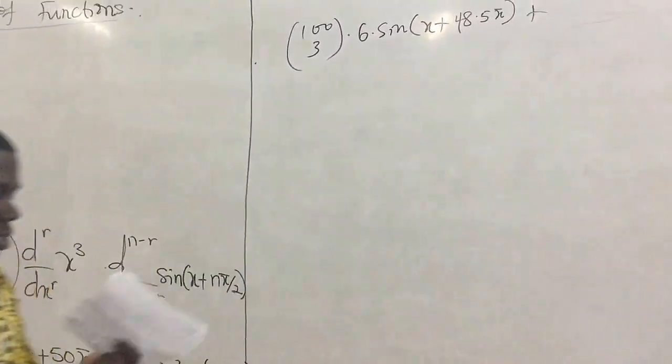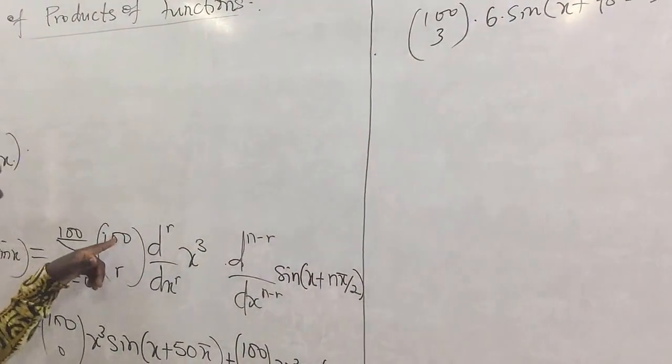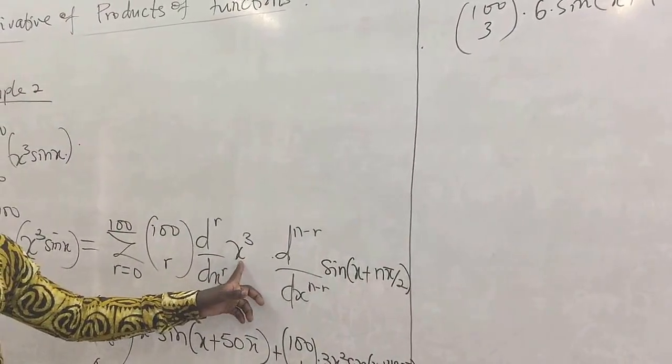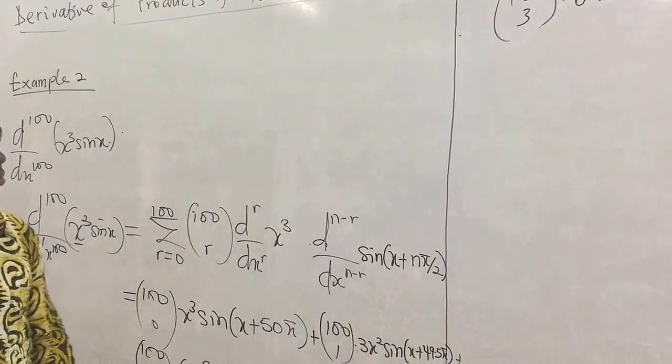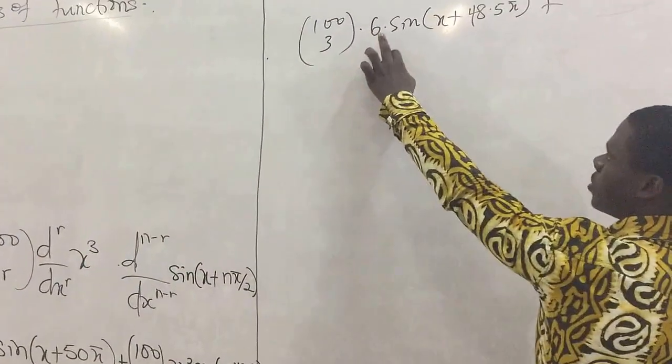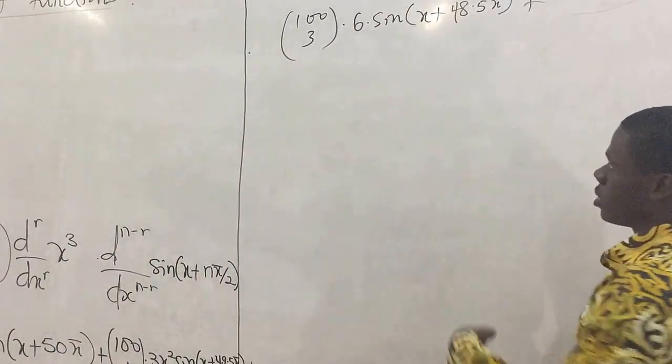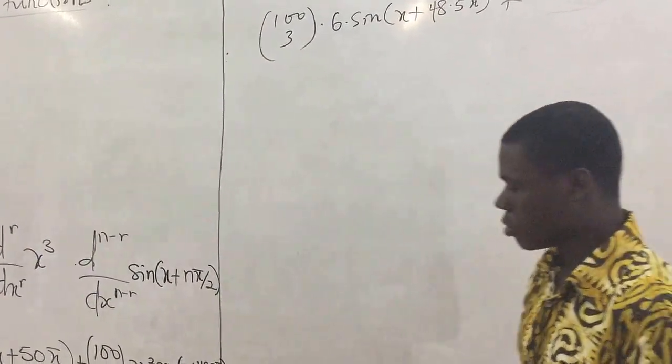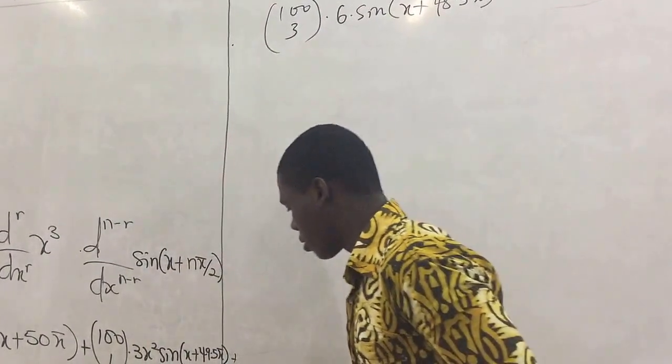So our r is 4. So if r is 4, you have 100 combination 4, then it becomes r is 4. So we differentiate this one 4 times, but after differentiating 3 times, we have a constant 6. So if we differentiate this, it gives us 0, and what we'll use to multiply whatever we're going to get, everything from here becomes 0, so we end it here.